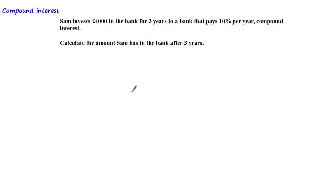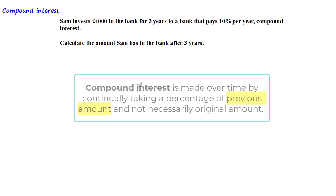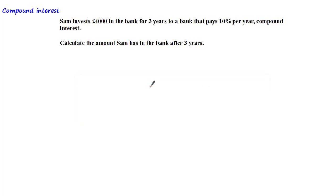In this tutorial we're going to learn about compound growth and decay and all the types of questions you might come across at GCSE level. Let's start off by looking at the definition of compound interest. Compound interest is a type of growth where interest is made over time by taking a percentage of the previous amount, and not necessarily the original amount.